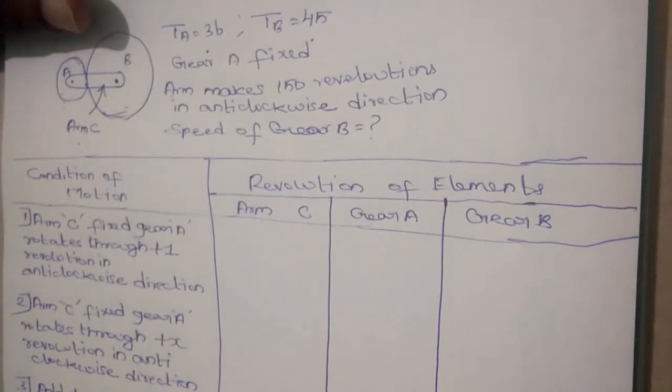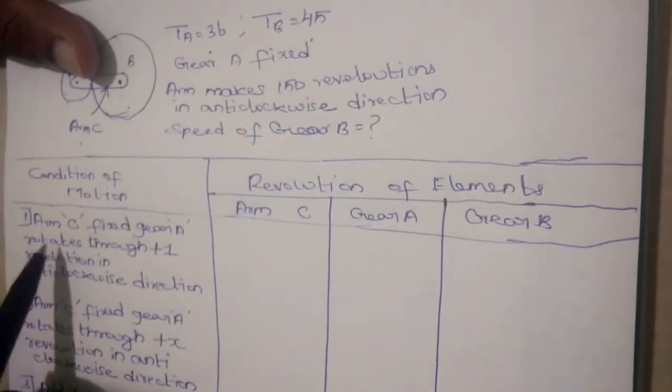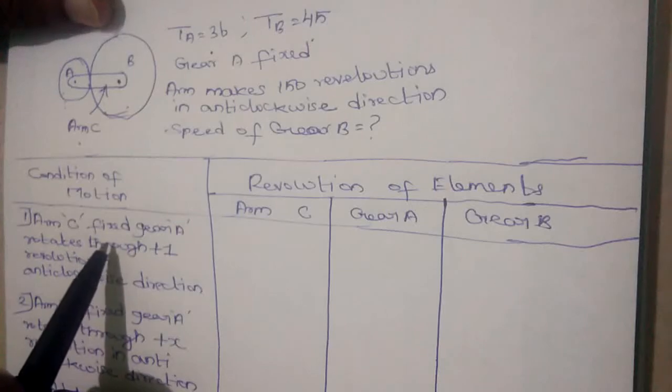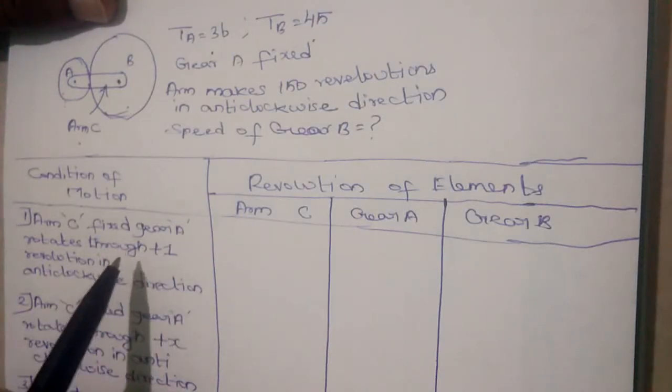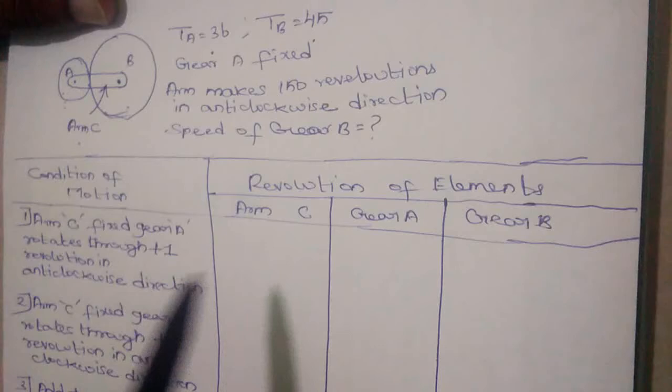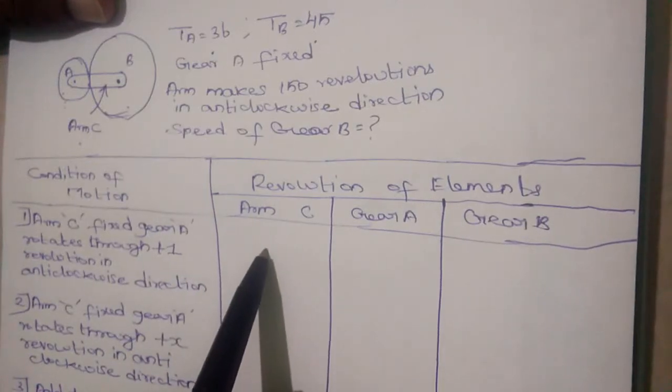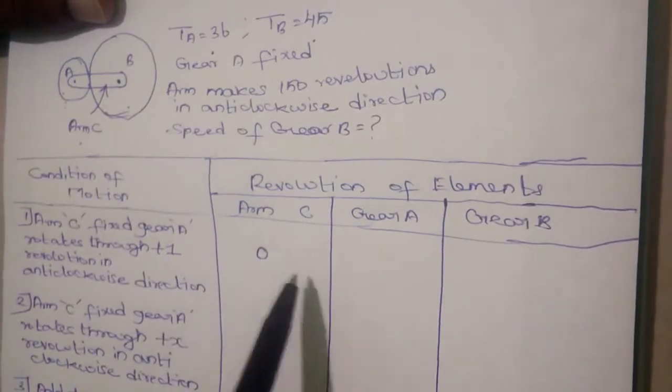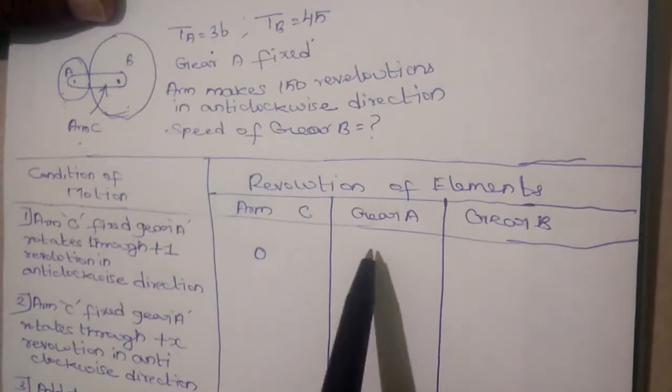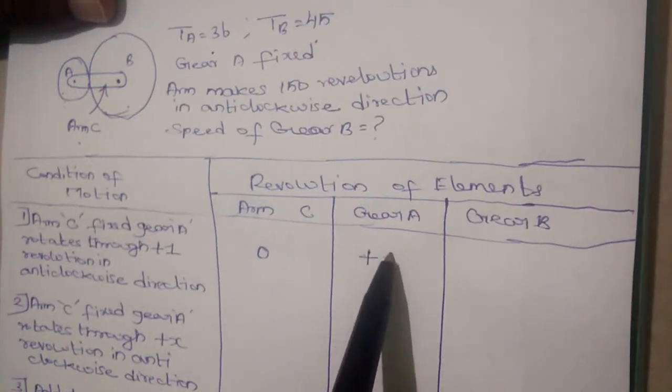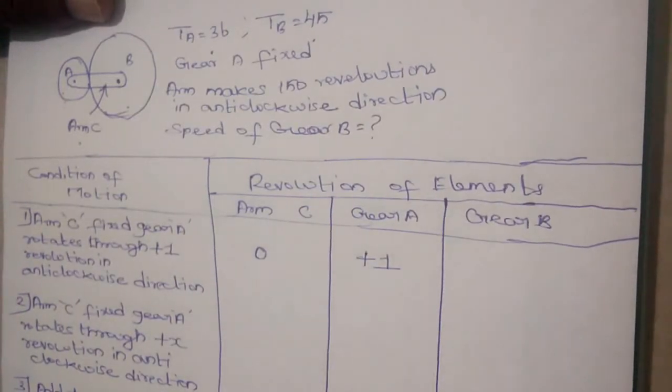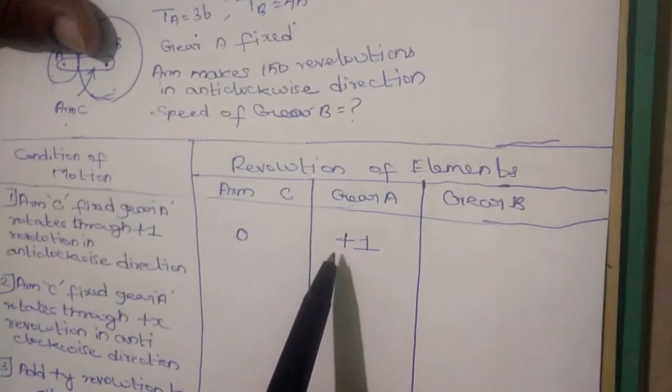The conditions of motion is: First, arm C is fixed. Gear A rotates through plus 1 revolution in anticlockwise direction. Since arm C is fixed, number of revolutions of C is 0. And here, Gear A makes plus 1 revolution in anticlockwise direction. Since it turns in anticlockwise, it is positive.